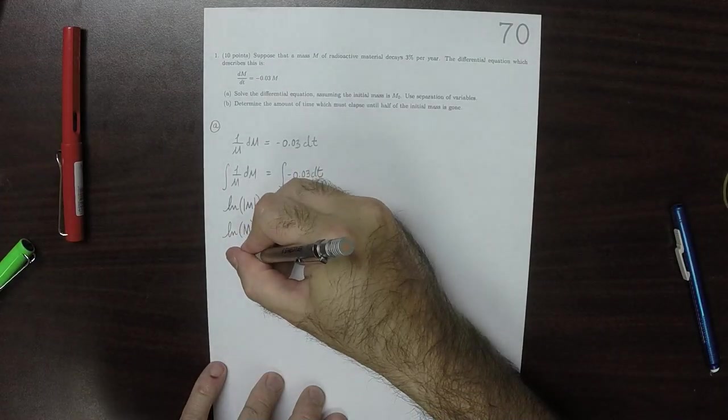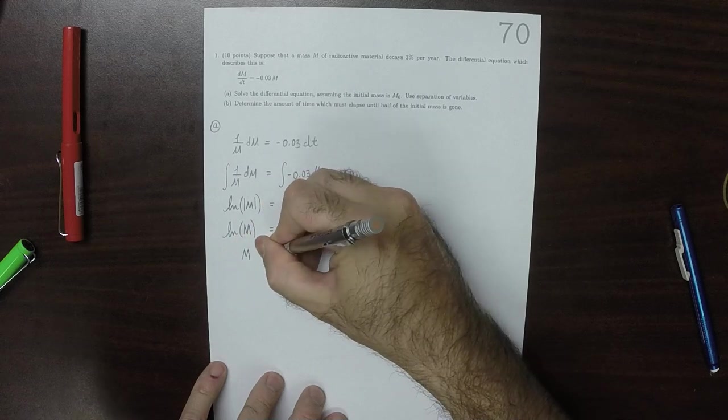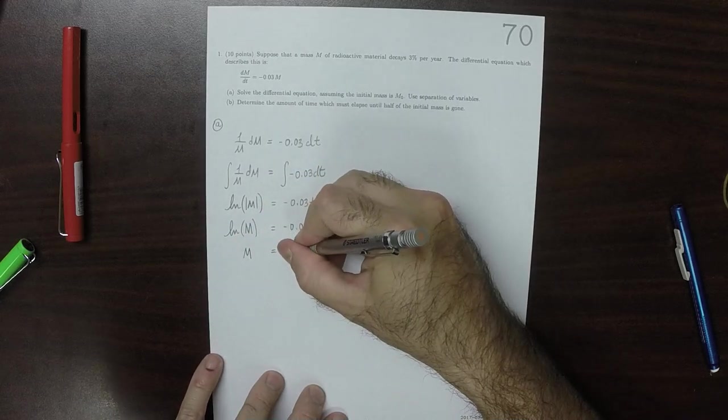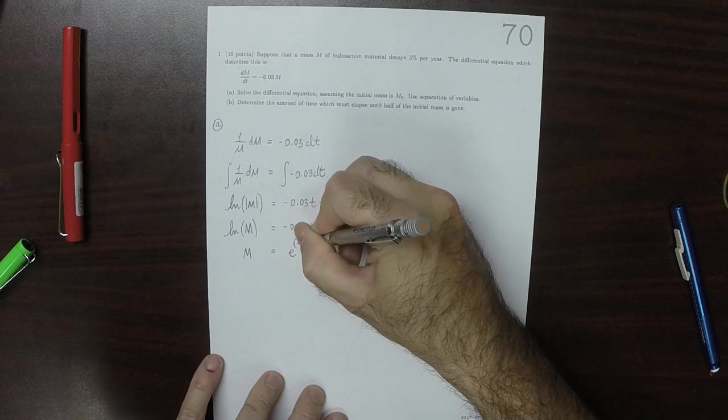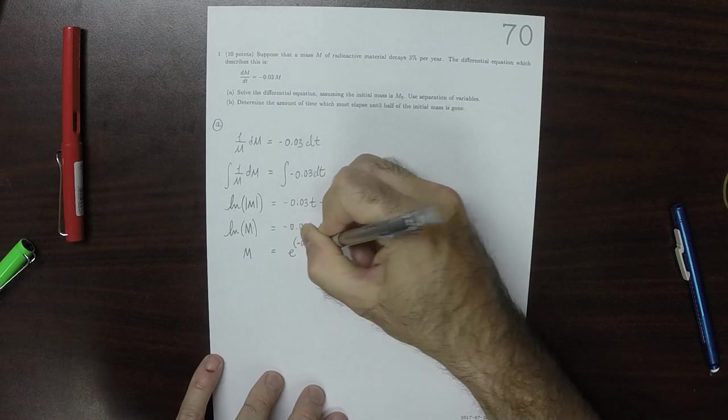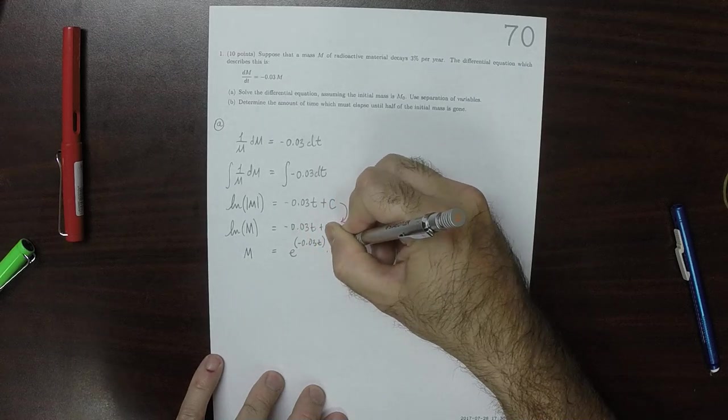We can then solve for m, obtaining exponential of negative 0.03 dT multiplied by the exponential of C.